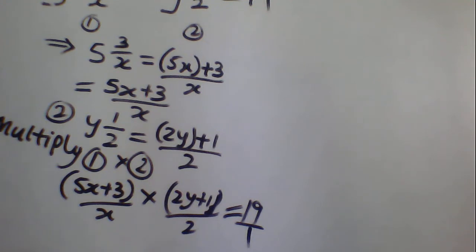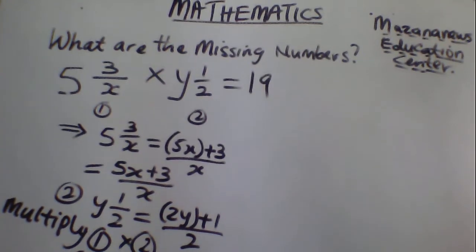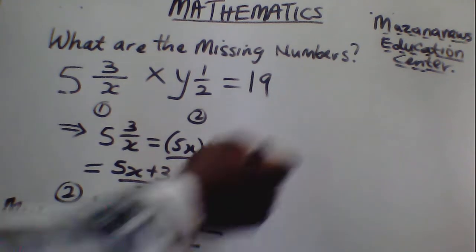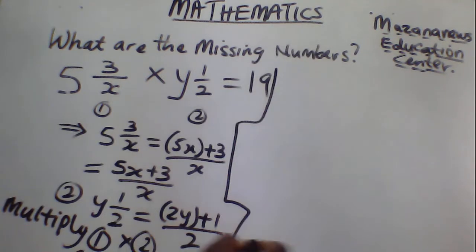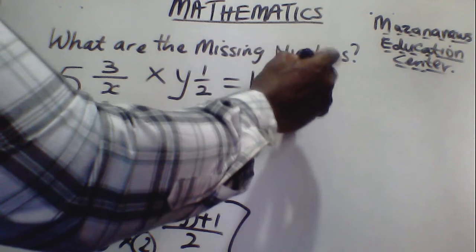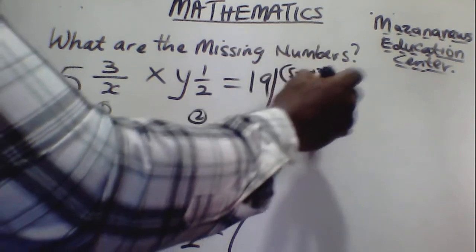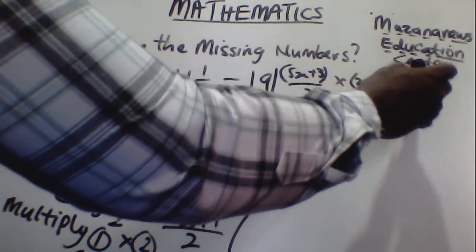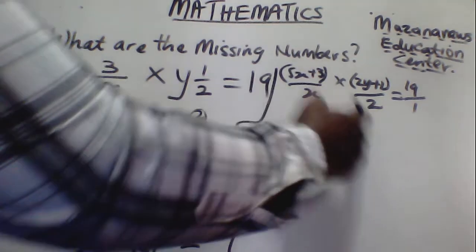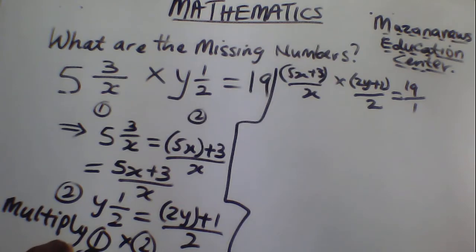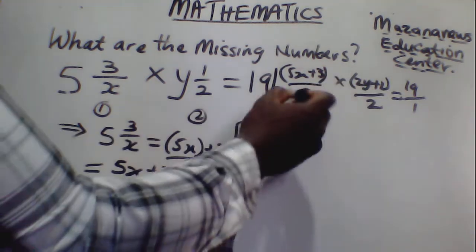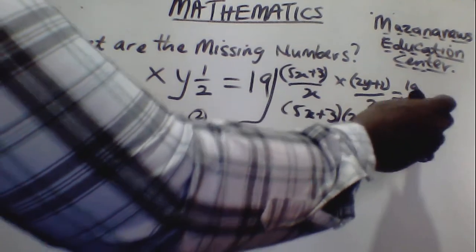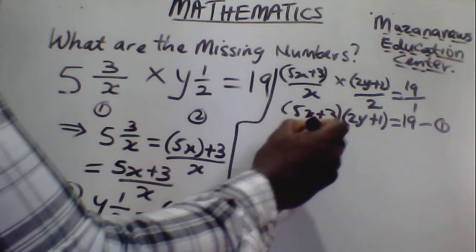We proceed. The equation is: 5x plus 3 over x, multiplied by 2y plus 1 over 2, is now equal to 19 over 1. So equate numerator by numerator, denominator by denominator. From here, we have: 5x plus 3 times 2y plus 1 is equal to 19 — call this equation 1. And x times 2 equals 1, so 2x equals 1.